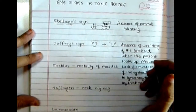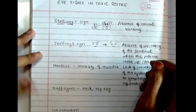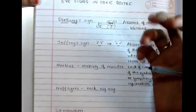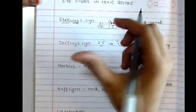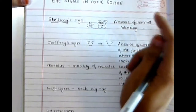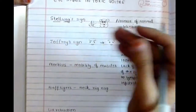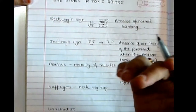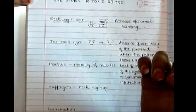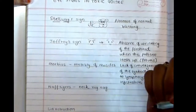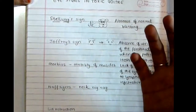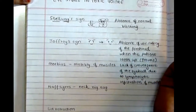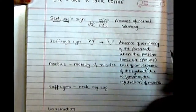Hi everyone, I'm going to talk about eye signs in toxic goiter. These eye signs have a lot of names, which makes remembering them very hard. I'm going to cover a few common eye signs and tell you how I remember them, and hopefully it'll help you.